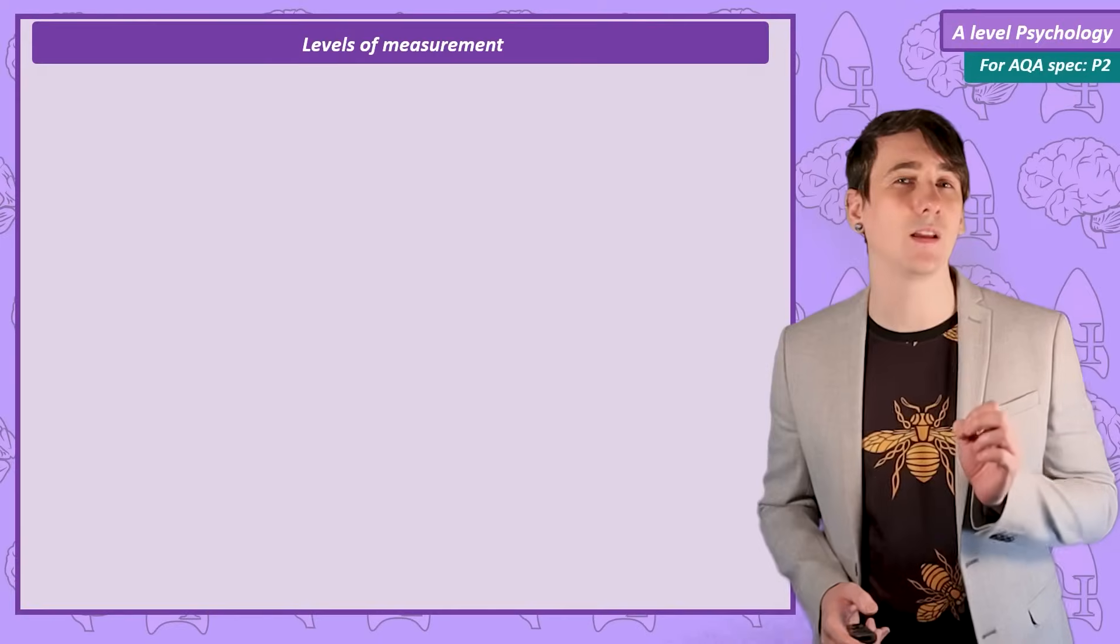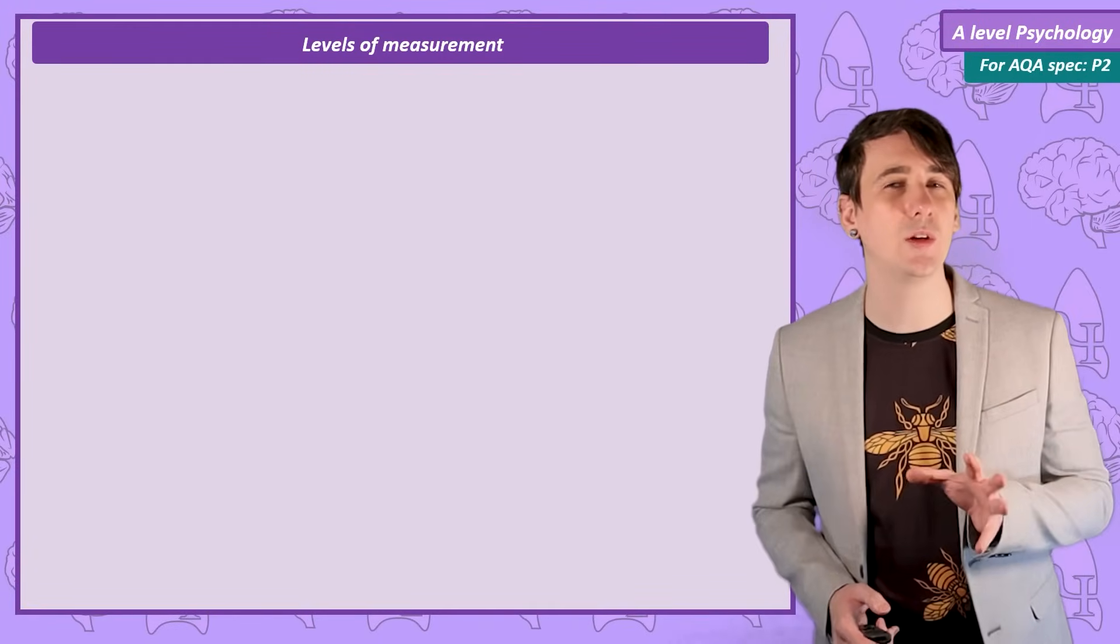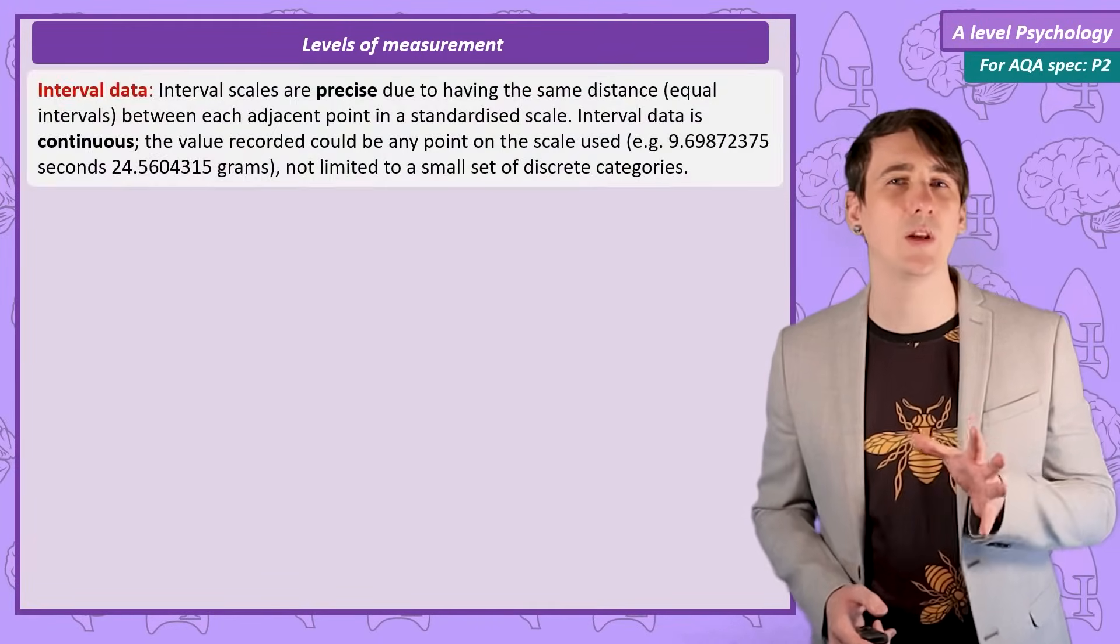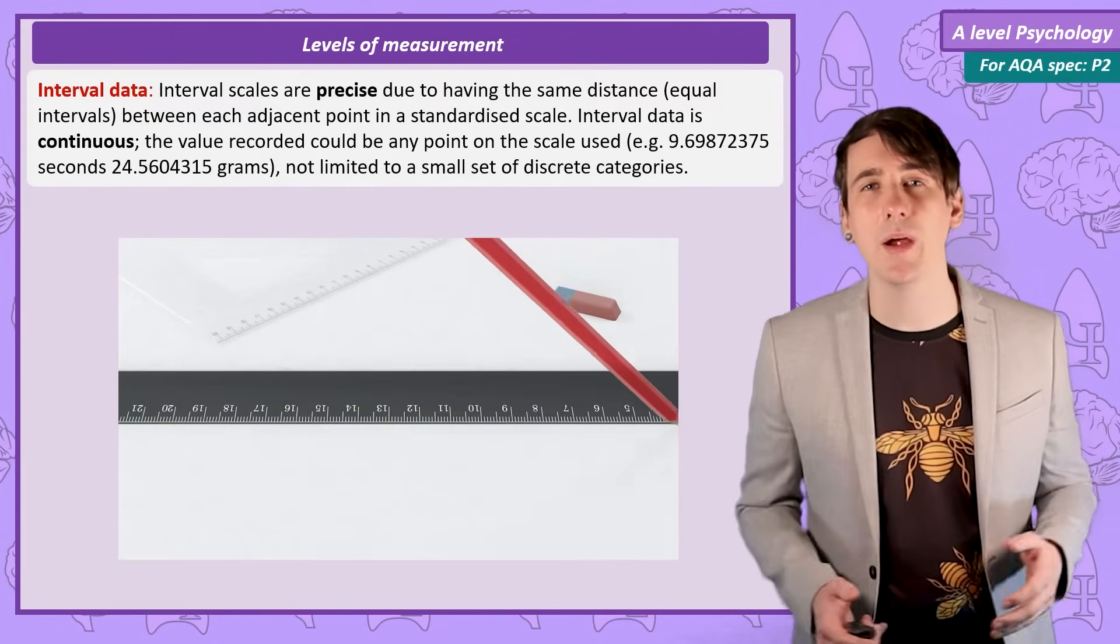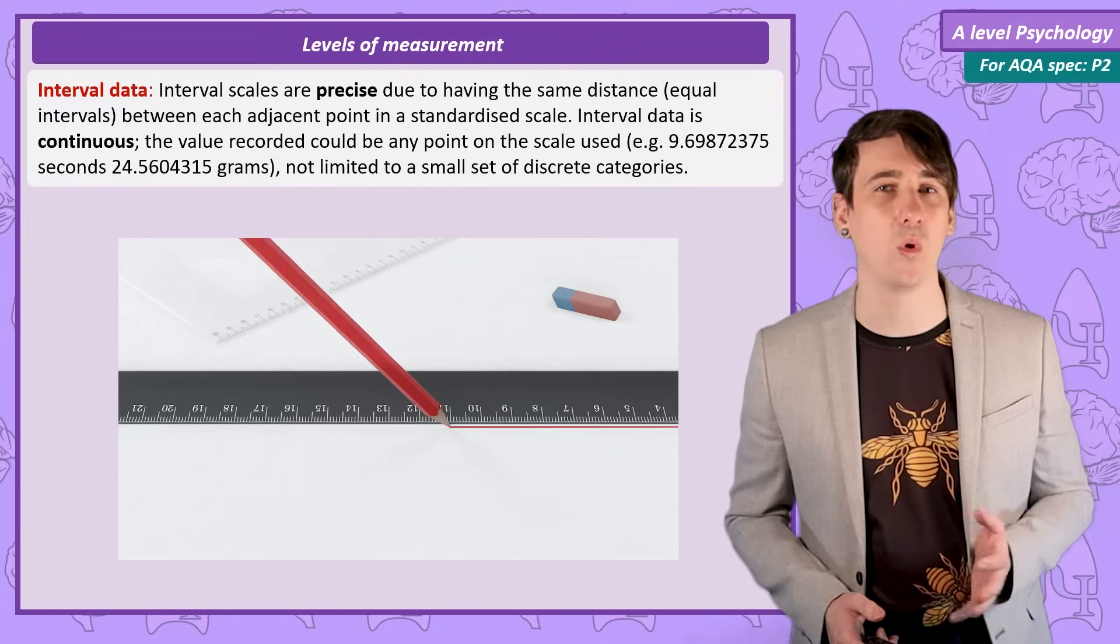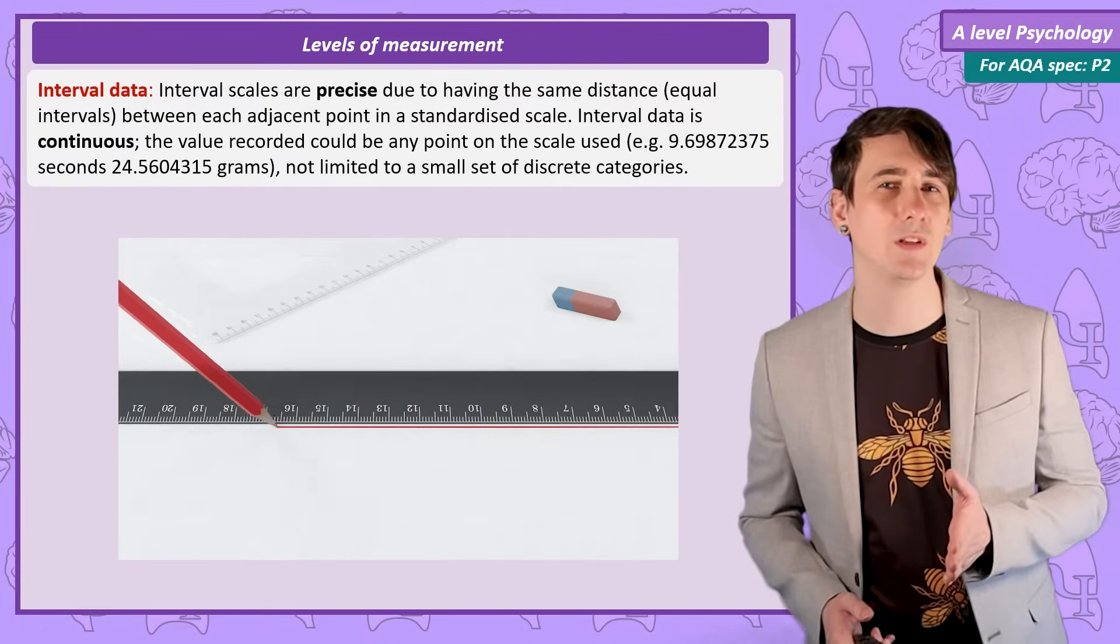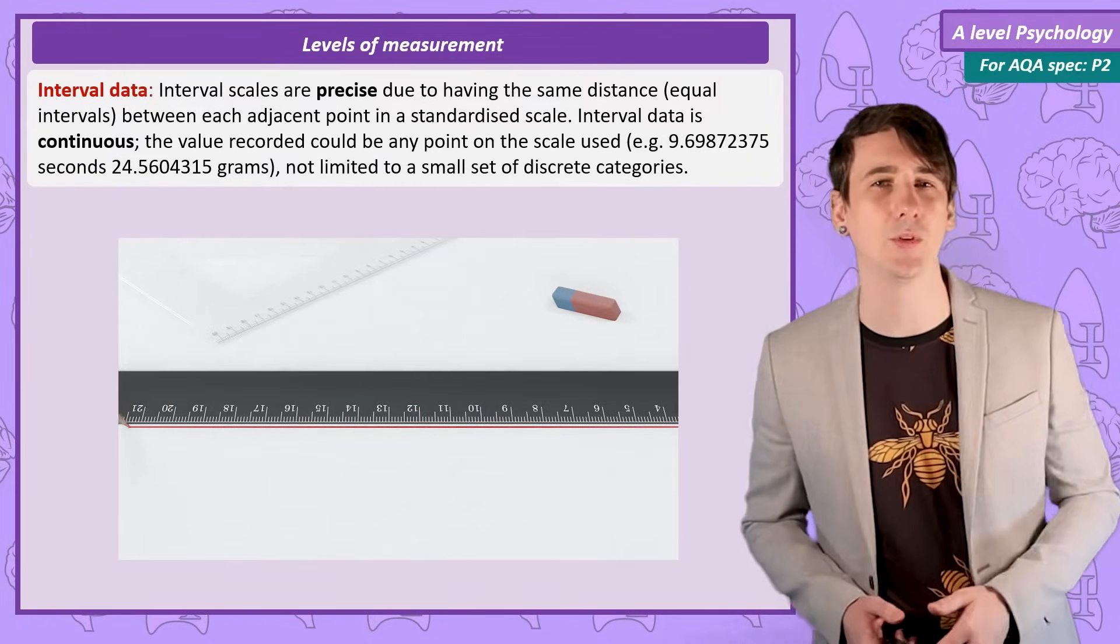Interval data. Finally, with interval data we use equal units of measurement, so equal intervals between each point in whatever scale we are using. Measuring length in millimetres is using interval data. One millimetre is half of two millimetres and four millimetres is double two millimetres.